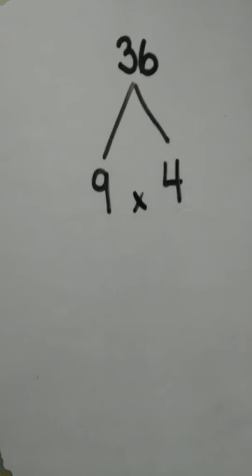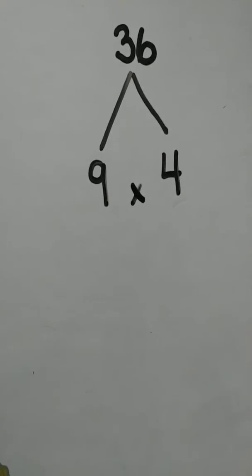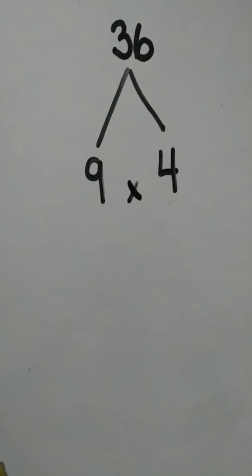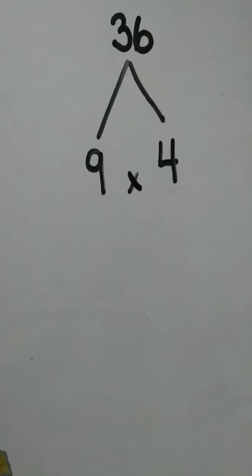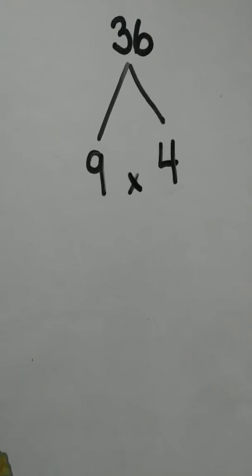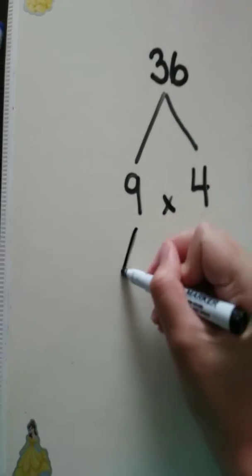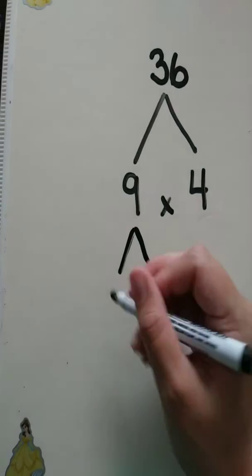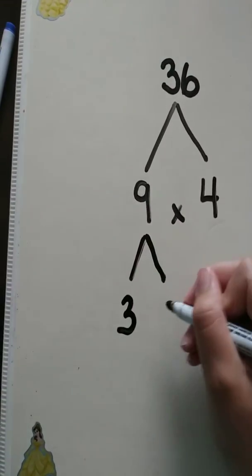And then, of course, we're going to ask ourselves, the next level of the factor tree, the next branch is, we have a 9 and a 4. Now, 9 and 4 are both composite numbers, so we're going to decompose them further. So, how do you make 9, or what two factors make up 9? Well, I could do 3 times 3.